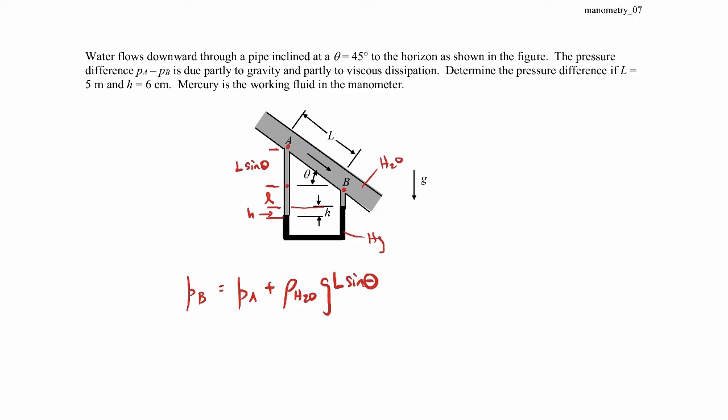Then I add in the weight of the water over that little distance l, so density of water times G times little l. Now I'm going to add in the last little bit of water over distance H. So now I have the pressure right at this point, right at the interface with the mercury.